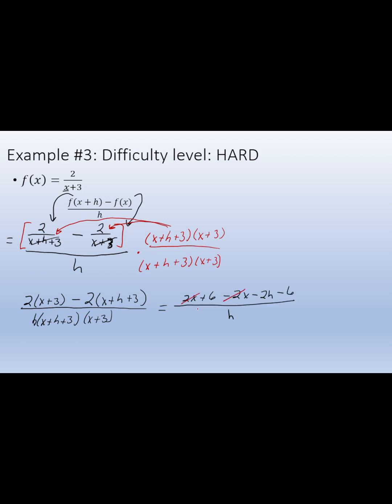2x and negative 2x cancel out. Positive 6 and negative 6 cancel. Negative 2h over h times (x+h+3) times (x+3). Factors of h cancel out, giving the result of negative 2 over (x+h+3) times (x+3). Now the final result.